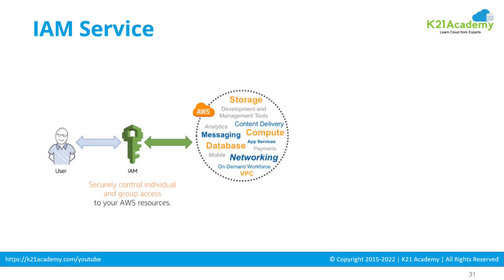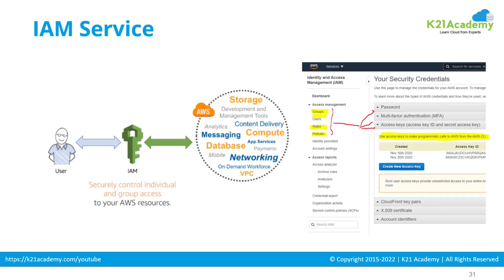IAM is a security control for individuals or a group of users' access to all your AWS resources — be it storage, networking, databases, Linux virtual machines, or any application services. Everything you can do in the AWS cloud, how you access that, is about Identity and Access Management. In this lesson we'll focus on the core IAM services: users, groups, roles, and policies, as well as passwords, multi-factor authentication, and access keys.